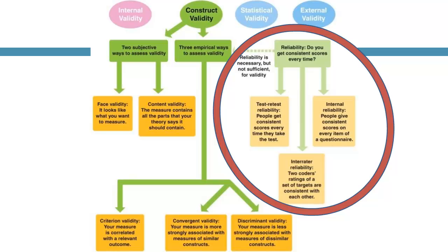This slide shows a concept map provided by your textbook author that lays out the whole idea of validity and reliability. At the top we have different kinds of validities, which will be in a later lecture video. In the red area, which I'll talk about right now, reliability in general asks: do you get consistent scores every time? There are three ways to look at that: test-retest, inter-rater, and internal.